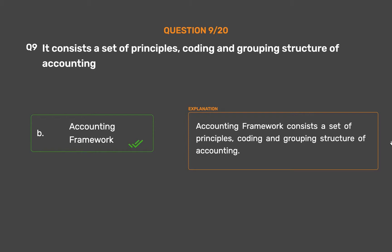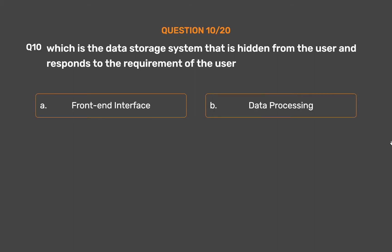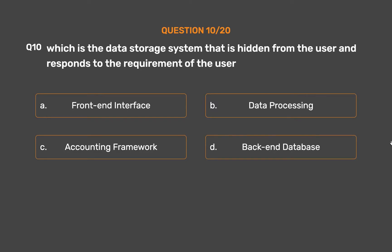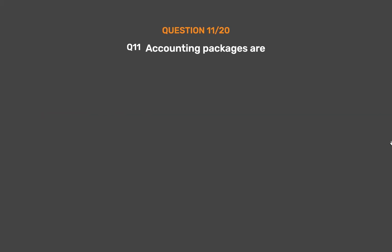Question number 10. Which is the data storage system that is hidden from the user and responds to the requirement of the user? Option A: Front-end interface. Option B: Data processing. Option C: Accounting framework. Option D: Back-end database. The correct answer is Option D: Back-end database. Back-end database is the data storage system that is hidden from the user and responds to the requirement of the user to the extent the user is authorized to access.